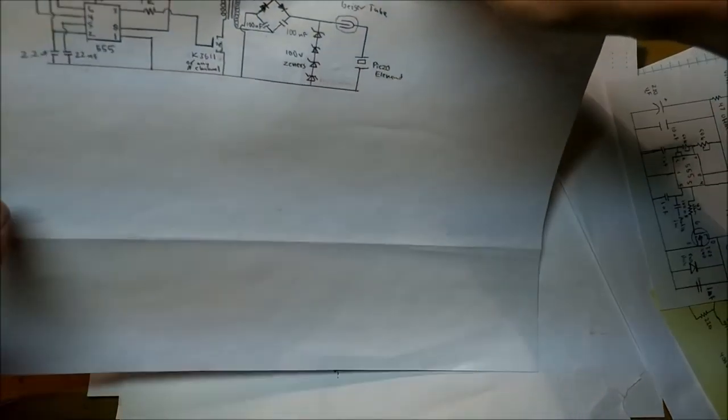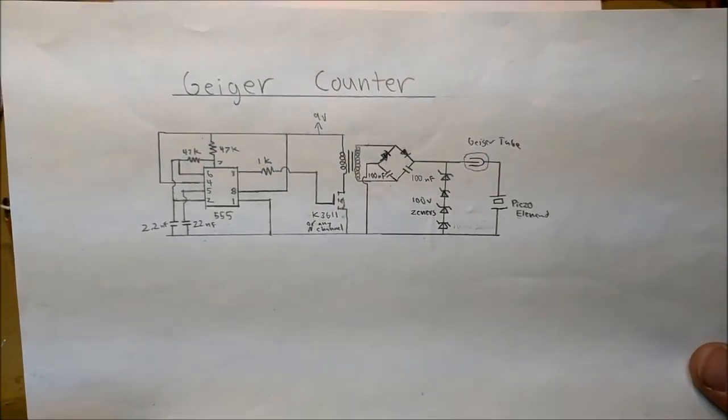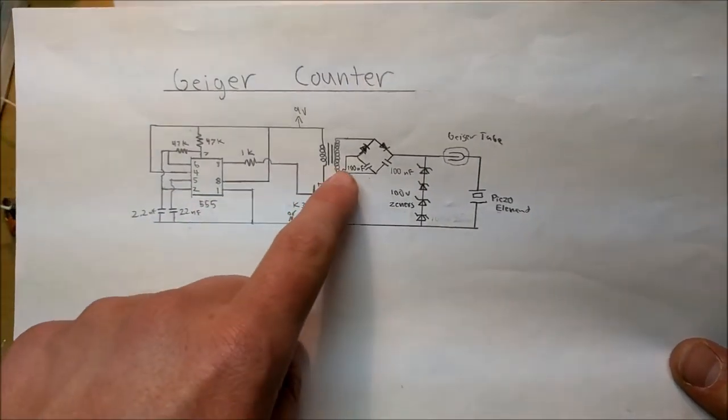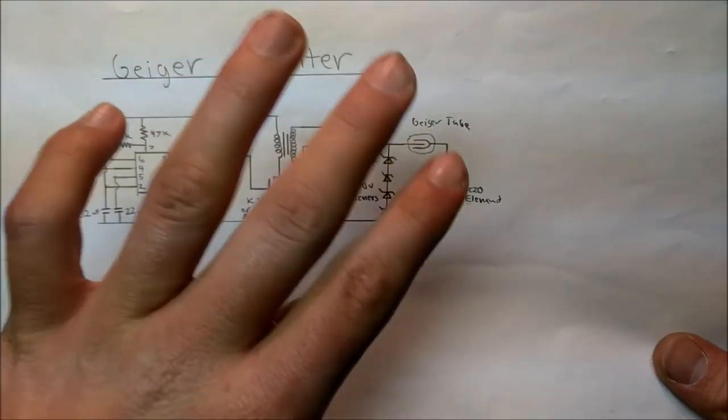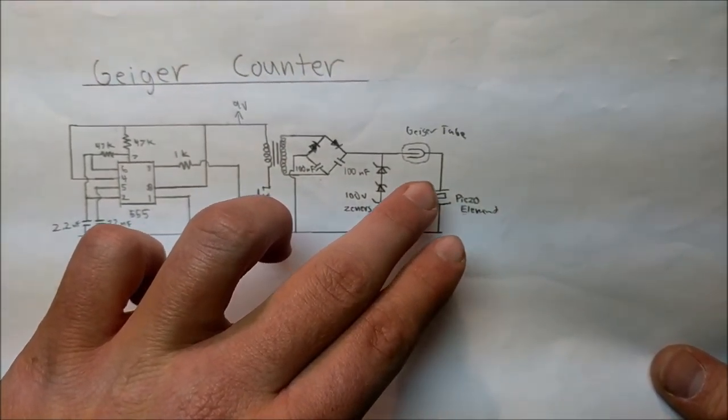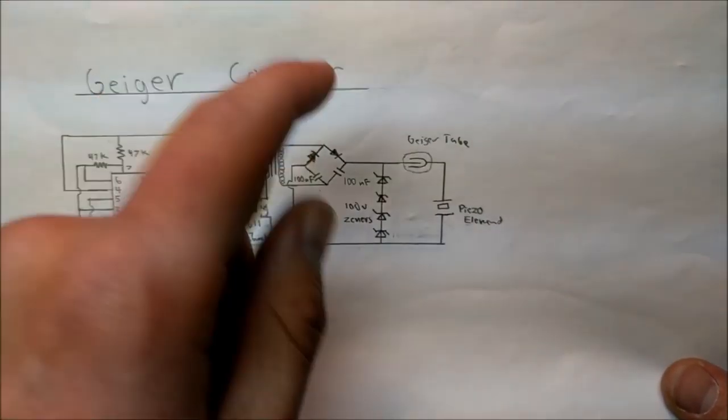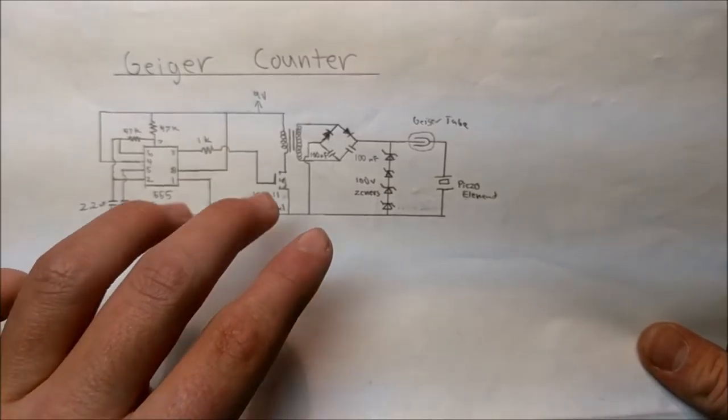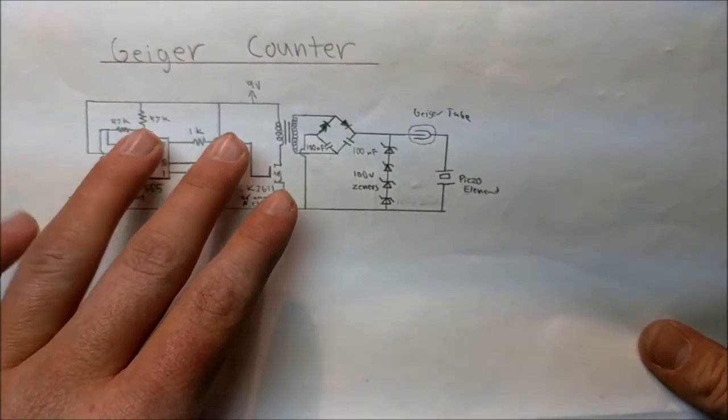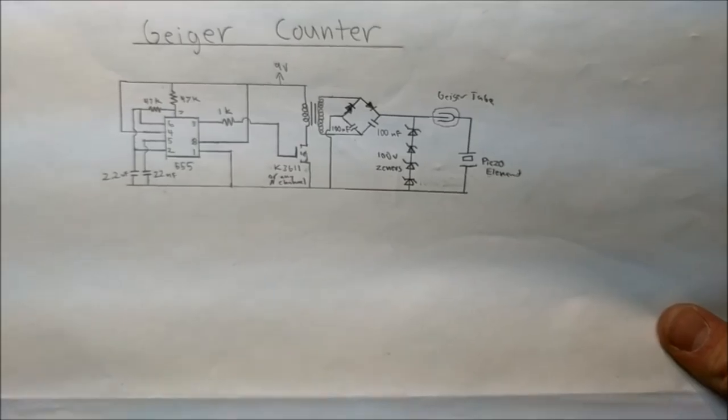We also have this Geiger counter circuit. This was my original Geiger counter circuit, for the power supply at least. This wasn't well designed. The power supply was well designed. The final output stage wasn't as well designed as I thought. The Geiger tube and the piezo element didn't work as well. But still, it's a pretty cool schematic and it uses a very good driver system to drive the transformer to create a high voltage.